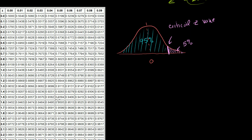Scanning the z-table, we have 0.9495 and 0.9505, so the critical z-value is 1.65. The probability of getting a z-value less than 1.65 — or being less than 1.65 standard deviations away from the mean in any normal distribution — is 95%. So our critical z-value is 1.65.